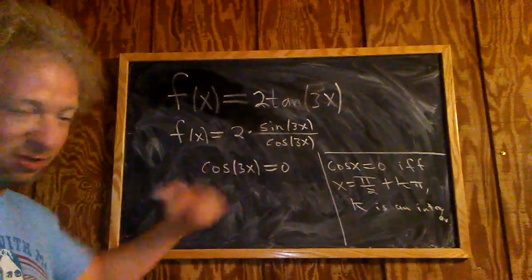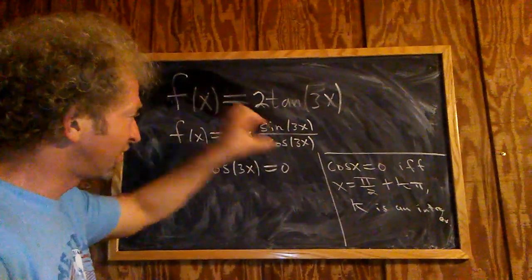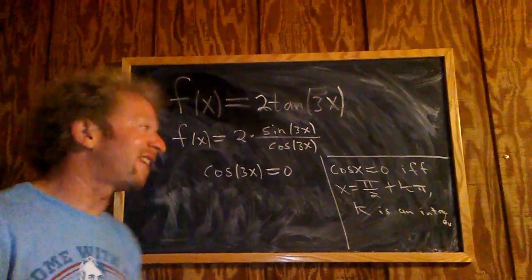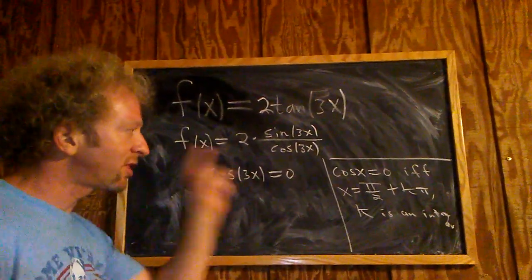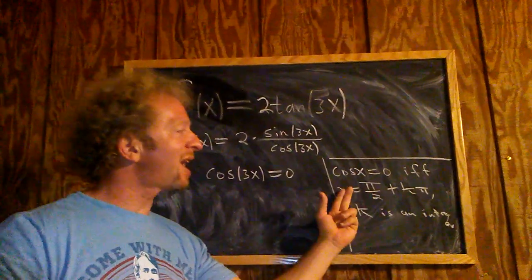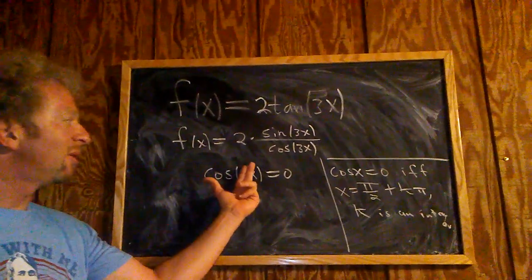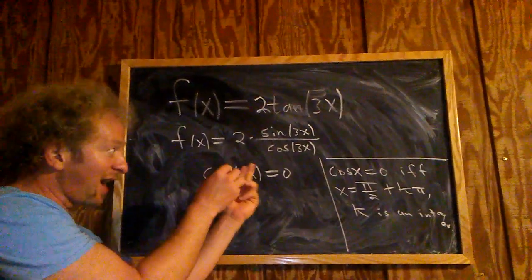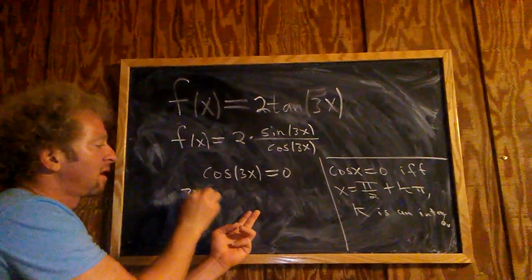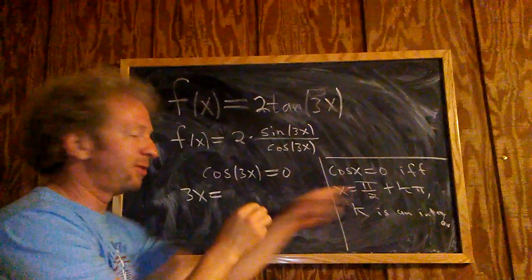In this problem we have tangent. You write it in terms of sine and cosine. It's going to have vertical asymptotes whenever it's undefined. That happens when the bottom is zero. So you know that cosine of x is equal to zero whenever x is equal to this. So in this problem it's cosine of 'blah' equal to zero whenever 'blah', which is 3x, equals pi over 2 plus k pi.